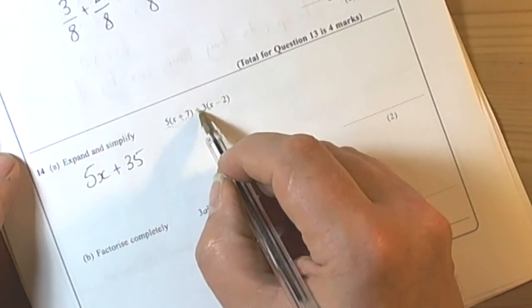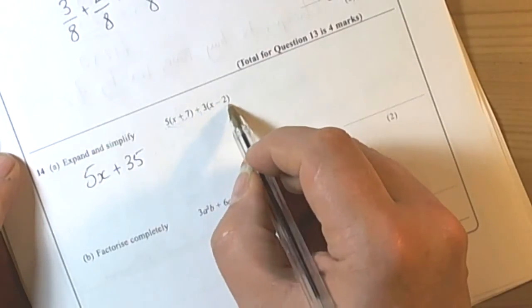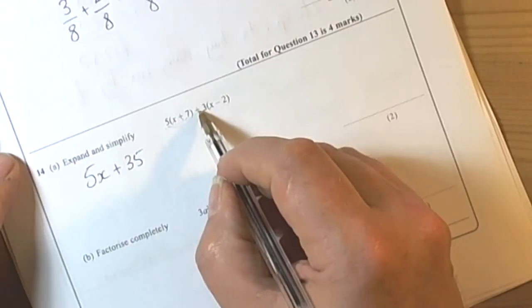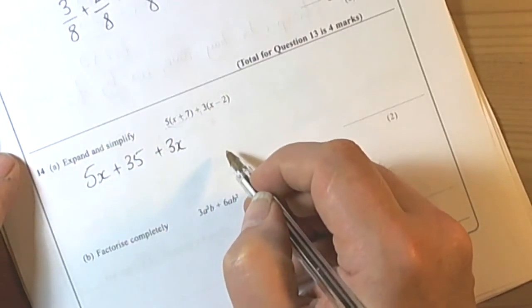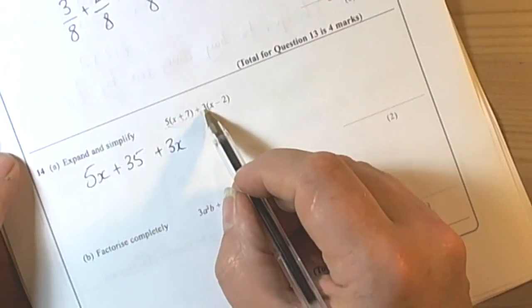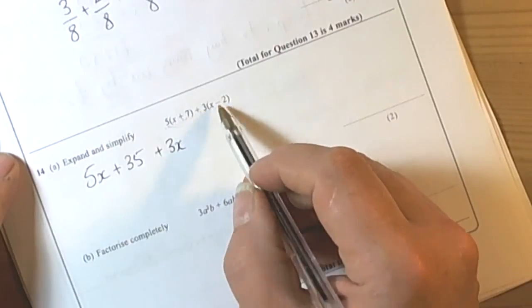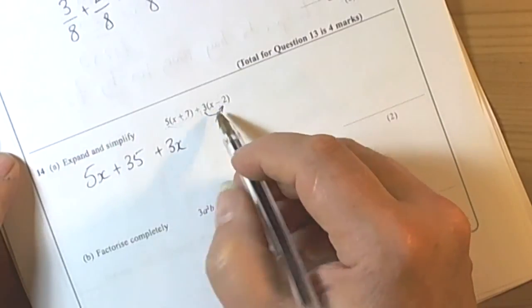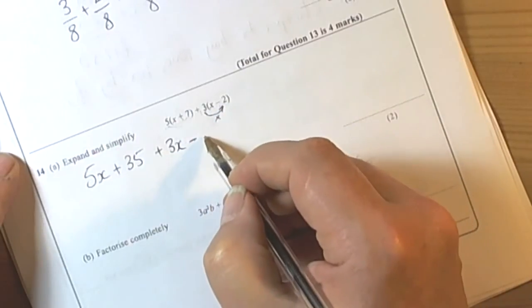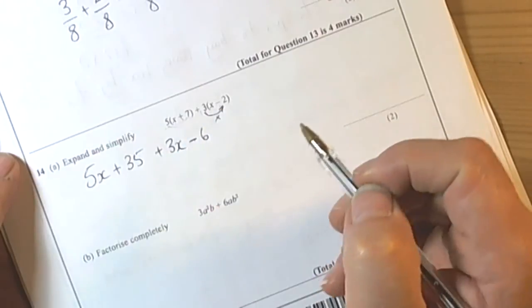The second bracket is telling us to do positive 3 times each of the terms inside, so we've got 3 times x positive, so plus 3x. And then we've got positive 3 times negative 2, so we have to be really careful here. We're timesing positive 3 by a negative which will make a negative answer, so it'll be negative 6, 3 times 2 being 6.